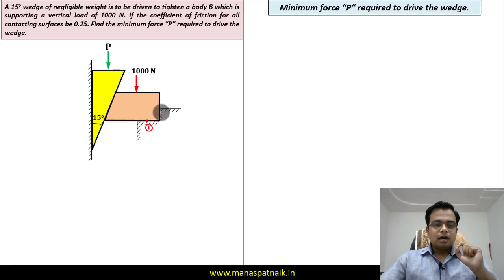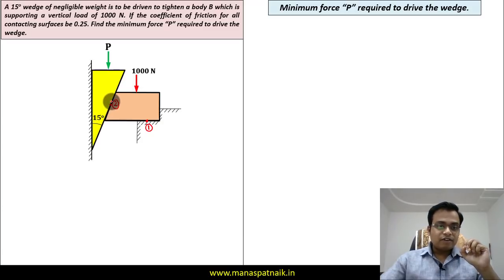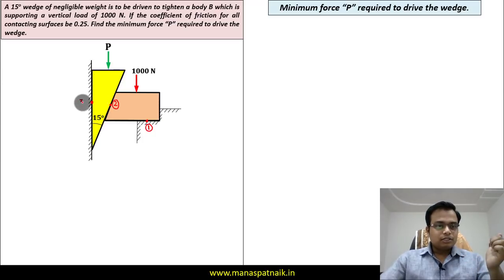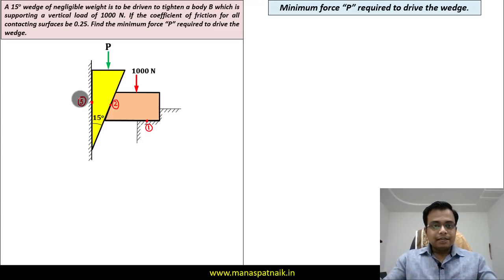There will be no friction along this vertical surface. The point of contact between the wedge and the 1000 Newton block — let's call this point of contact two. And finally, the point of contact of the wedge with the wall — let's call this point of contact three. Now we need to make the free body diagram of both bodies, that is the wedge as well as the block.